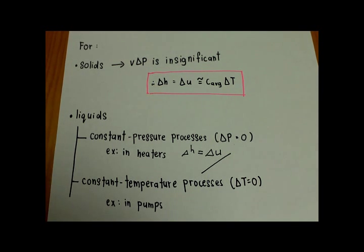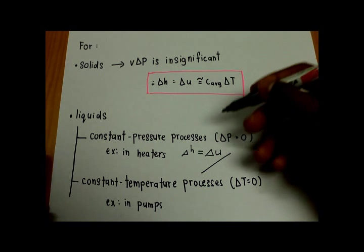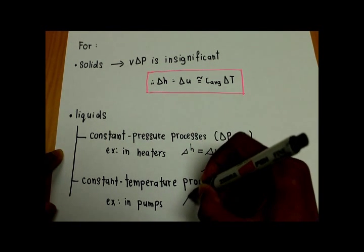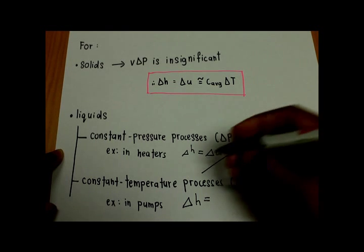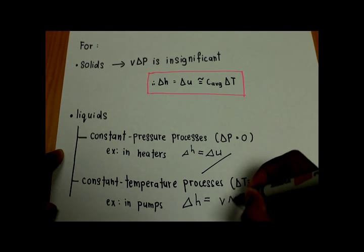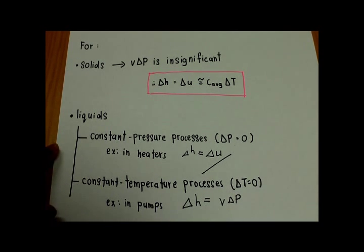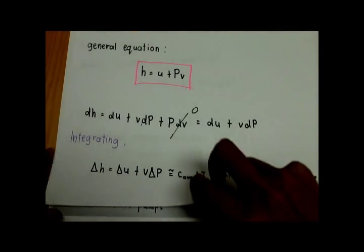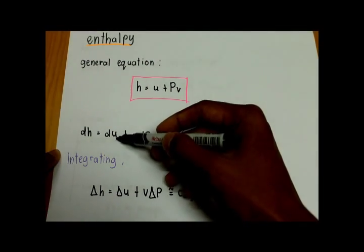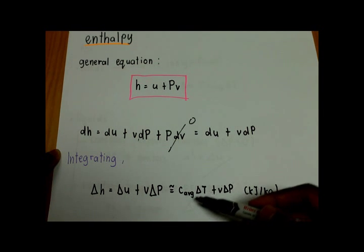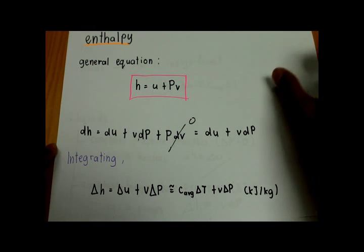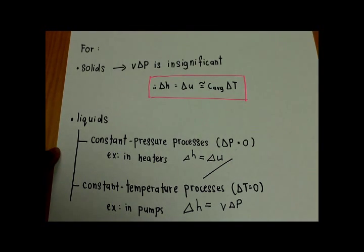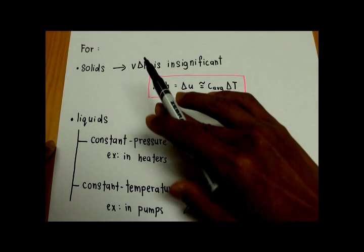Moving on to the next special case: the constant temperature process. In this process, the temperature change is zero. When the temperature change is zero, the final equation is the change of enthalpy equal to v delta P. Because in the internal energy part it contains temperature, when the temperature change is zero, the change of enthalpy equals v delta P. That covers both special cases for liquids.